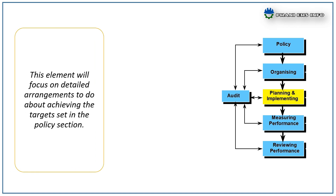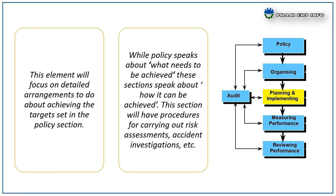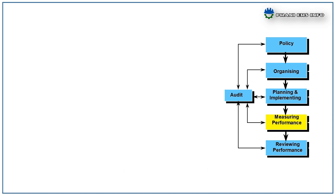Planning and Implementation: This element focuses on detailed arrangements for achieving the targets set in the policy section. While policy speaks about what needs to be achieved, this section speaks about how it can be achieved. This section will have procedures for carrying out risk assessments, accident investigations, etc.